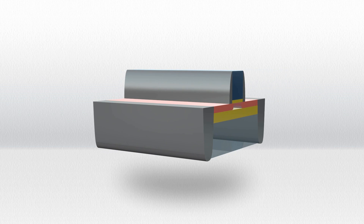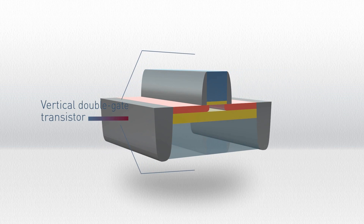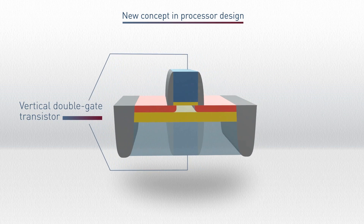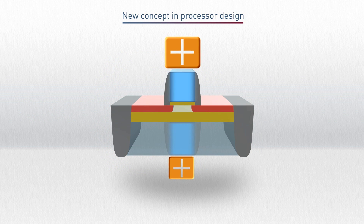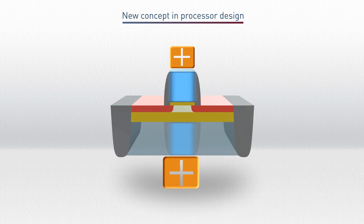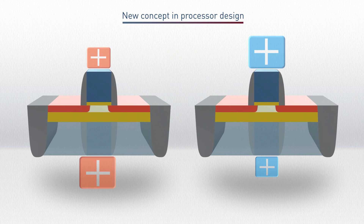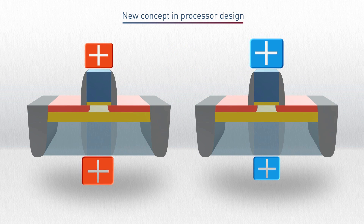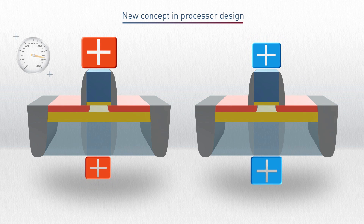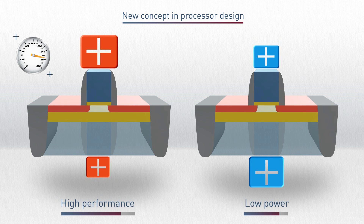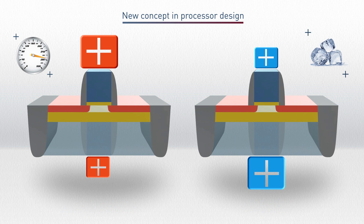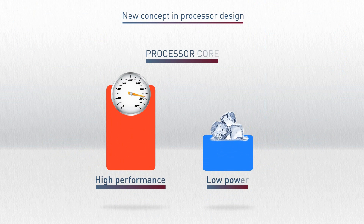The characteristics of the FDSOI vertical double-gate transistor allow the creation of a new concept in processor design. Different voltages can be applied independently to the top and the buried gates, which effectively change the characteristics of the transistor. By choosing optimal combinations of the voltages on the top and buried gates, the transistor characteristics can be transformed from those of a very high performance transistor to those of a very low power transistor. A processing core built up of such transistors can operate as if it were in fact two cores, one optimized for high performance and the other for low power.